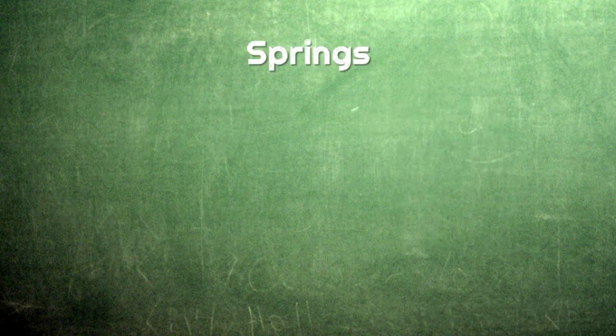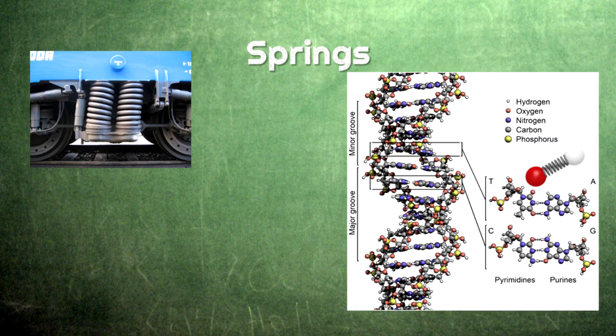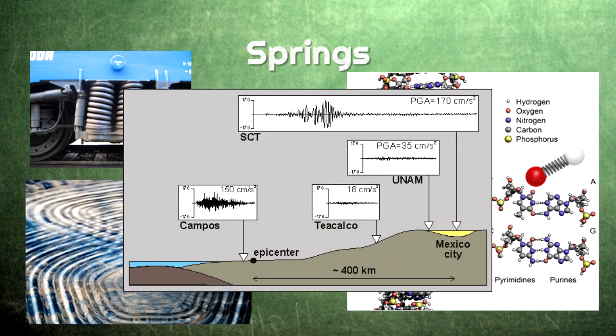Springs are an important topic in physics. We use springs frequently in machines, and there are lots of physical systems that behave like springs, such as the bonds between atoms, vibrations, and even earthquakes.